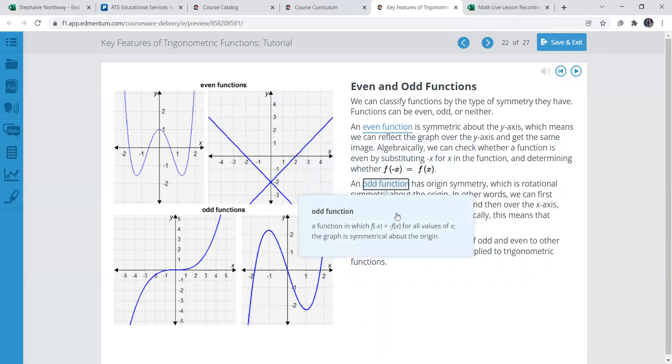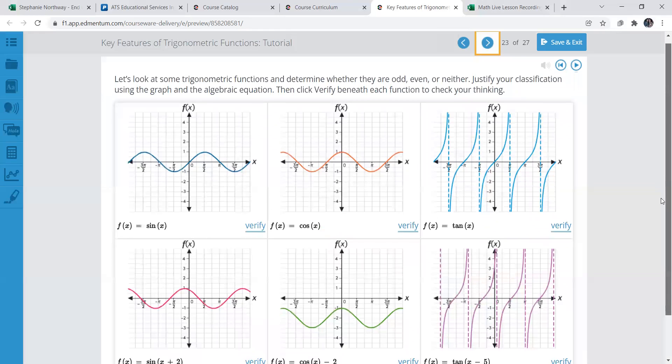And we have the odd function: a function in which f of negative x and negative f of x for all the values of x. The graph is symmetric about the origin. Just some different examples here.